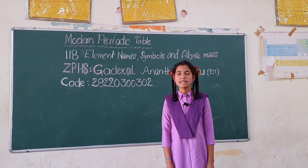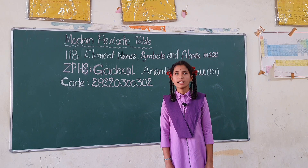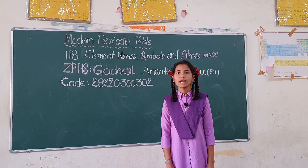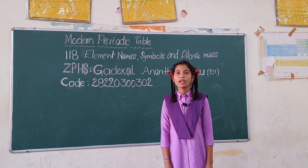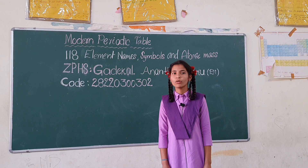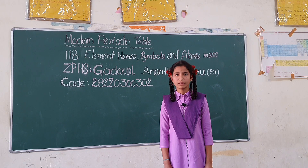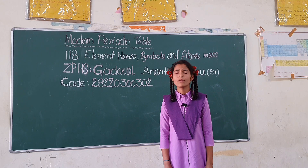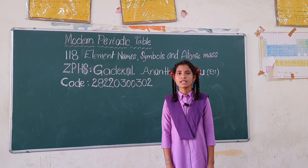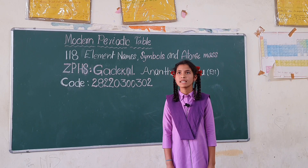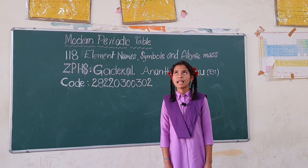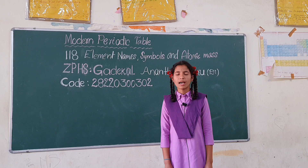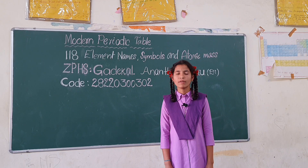Aluminium Al 26.98, Silicon Si 28.09, Phosphorus P 30.97, Sulphur S 32.06, Chlorine Cl 35.45, Argon Ar 39.95.